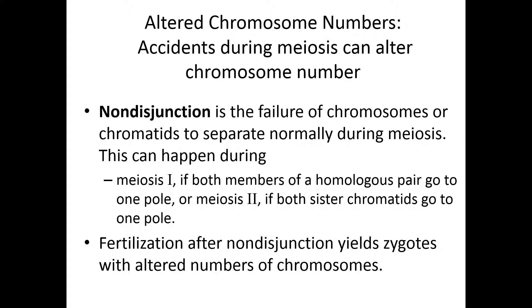Sometimes during meiosis things don't go as they should. You can have something called non-disjunction, where your chromosomes fail to properly separate from one another — either your homologous chromosomes fail to separate or your individual sister chromatids fail to separate. This can happen during meiosis I and meiosis II. If chromosomes fail to properly separate, you end up with daughter cells with an inappropriate number of chromosomes.